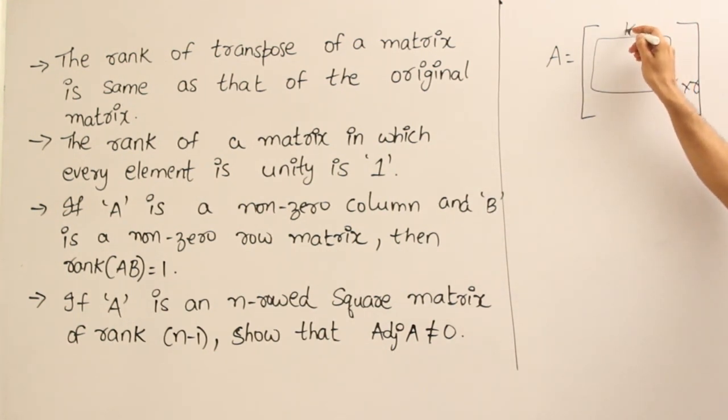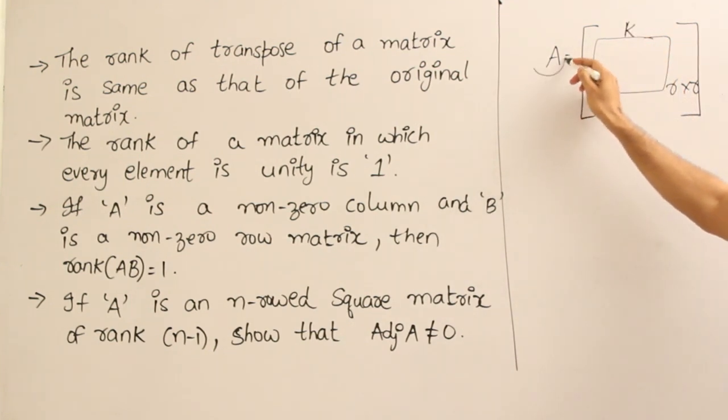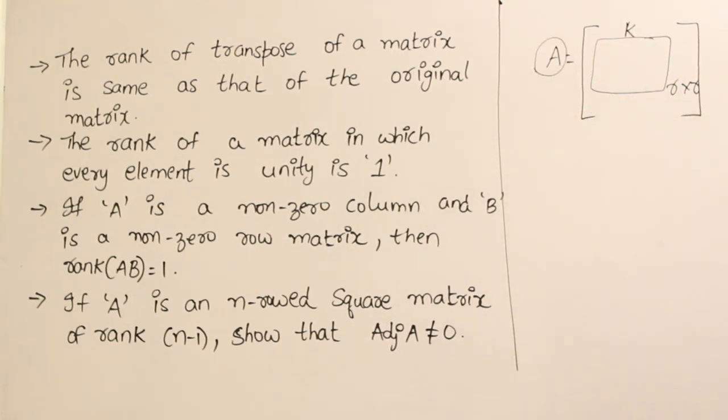let us say the determinant is equal to K, some number K. And now, what they are trying to say is even if you take A transpose, it will also have the same rank.